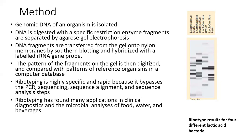The patterns of the fragment data generated on the gel are then digitalized and they are compared with the patterns of the reference organism already present in the database. Ribotyping is a highly specific and rapid method because it bypasses the requirement of PCR, sequencing, sequence alignment, and sequence analysis steps.